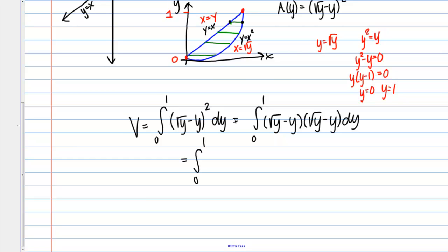And if I do that, it looks like I get y minus, so root y times y is y to the 3 halves. And I have two of those terms. So minus 2y to the 3 halves plus y squared.